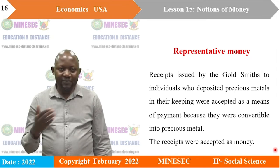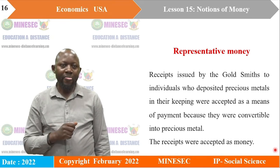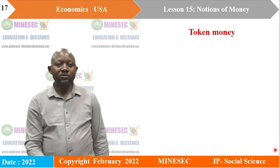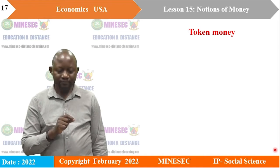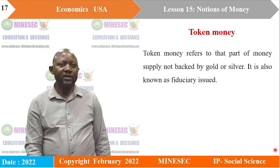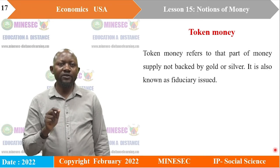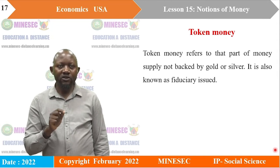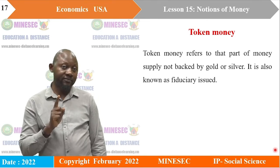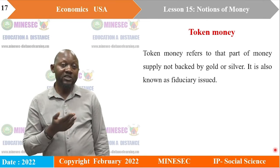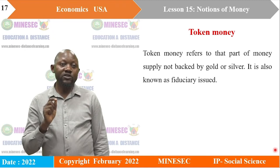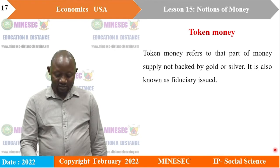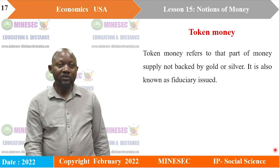Now we get to the modern form of money: token money. Token money refers to that part of the money supply not backed by gold or silver. In the past, money had to be backed by gold. Token money is also known as fiduciary issue, meaning it can be backed simply by government confidence, not by gold. It exists simply because people have confidence in it.